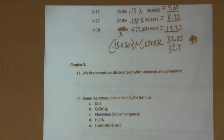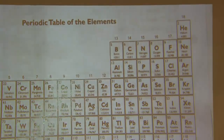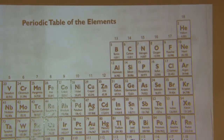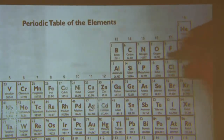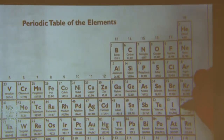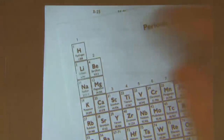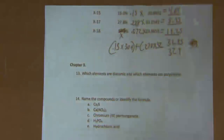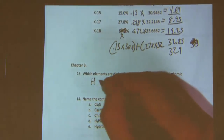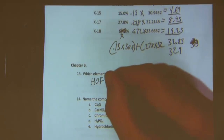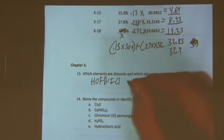Diatomic elements — the mnemonic is HOFBrINClE (hydrogen, oxygen, fluorine, bromine, iodine, nitrogen, chlorine). Polyatomic elements include phosphorus (P4), sulfur (S8), and selenium (Se8). You need to know that oxygen gas is diatomic (O2), so its molar mass is 32 grams per mole, not 16.